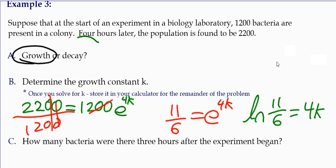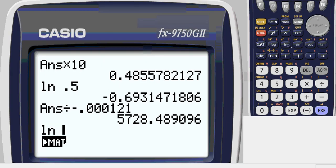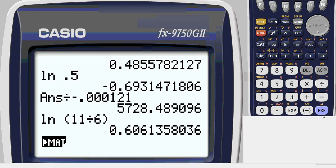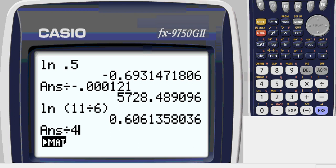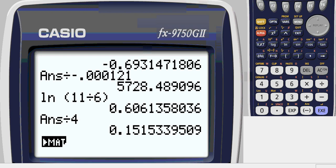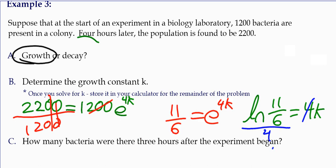So to get k by itself and finish it off, we just have to divide. And then it's calculated. Natural log 11 over 6 divided by 4. So we get 0.1515. k is about 0.1515.